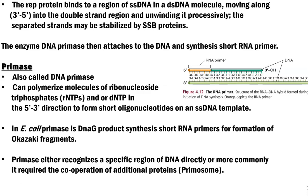Primase is able to polymerize molecules of ribonucleotide triphosphates as well as deoxyribonucleotide triphosphates, especially in the 5' to 3' direction, to form a short stretch of oligonucleotides which attach to the single strand DNA template. This kind of short primer-like sequence is required for the DNA polymerase enzyme to start the process of replication. In E. coli, this primase is an enzyme obtained from the gene named dna g.